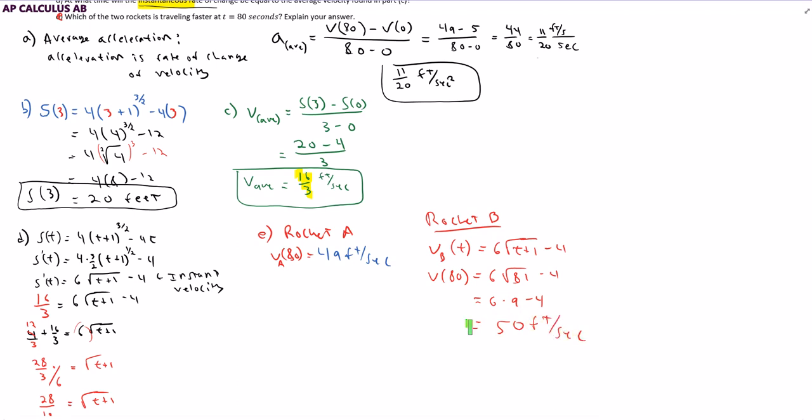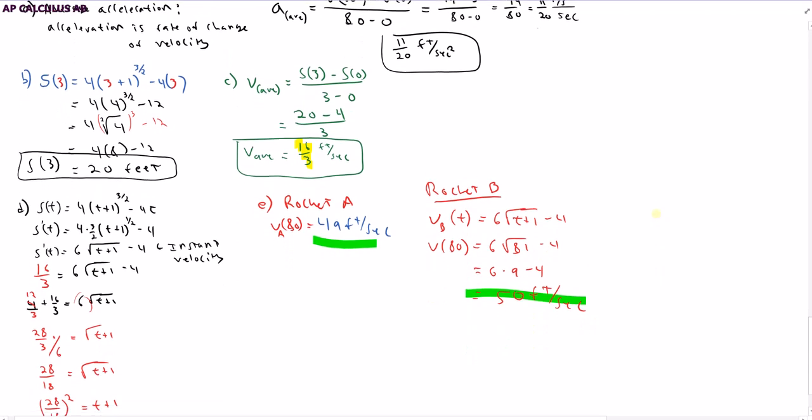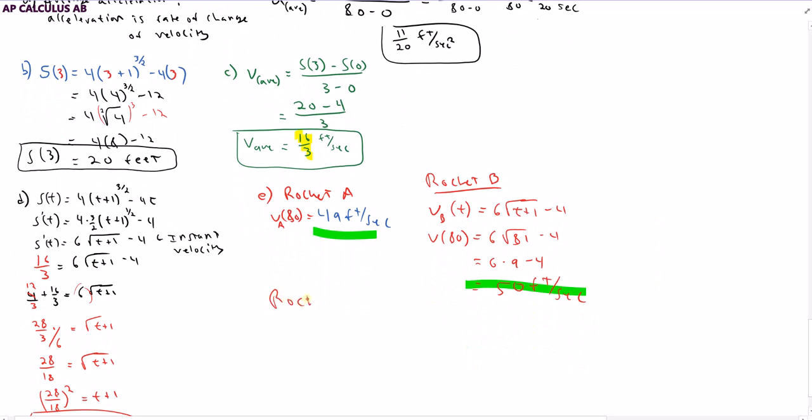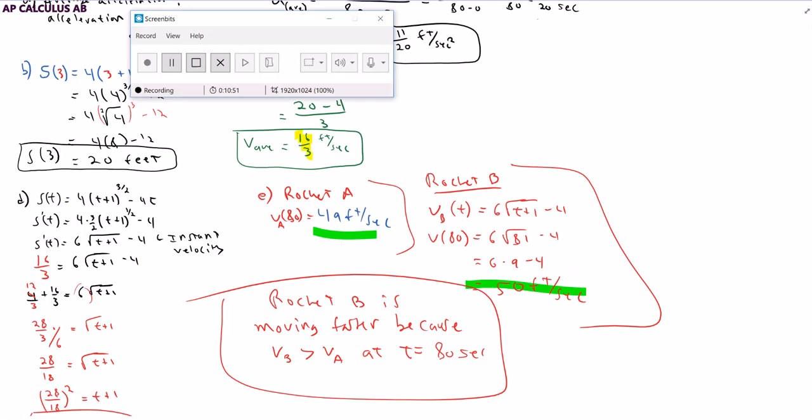So rocket A is going at 49 feet per second. Rocket B is going at 50 feet per second. Who is traveling faster? And you have to justify it to explain. So we're going to say rocket B is moving faster because V of B is greater than V of A at T equals 80 seconds. The velocity of B is greater than the velocity at T equals 80 seconds. You showed your work up here, which is your justification. That's the answer you write, and you are done.